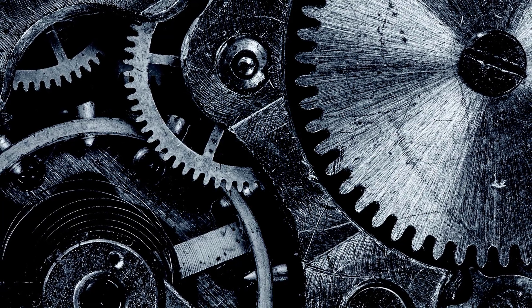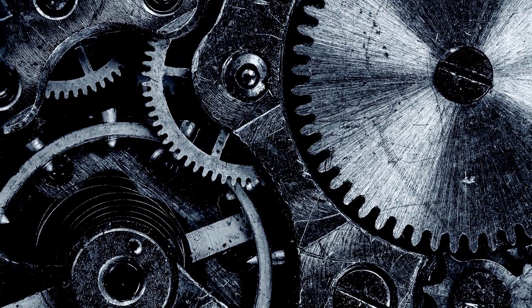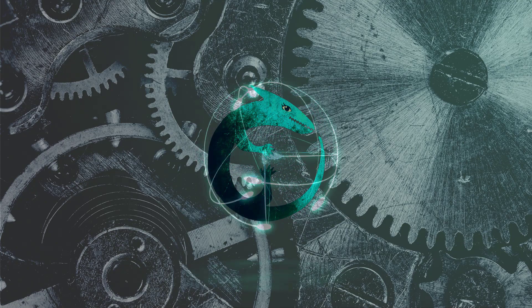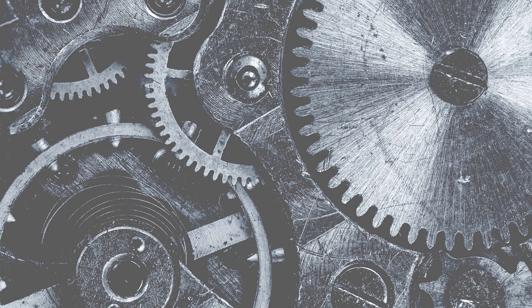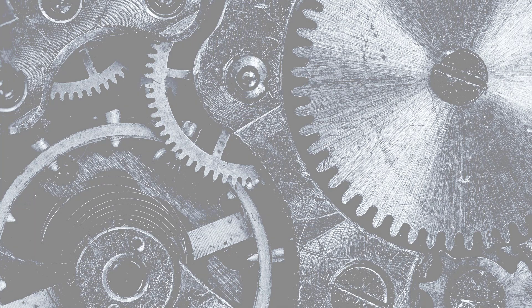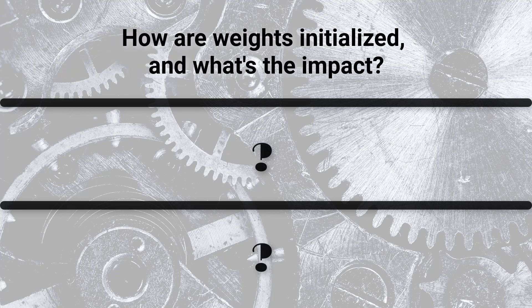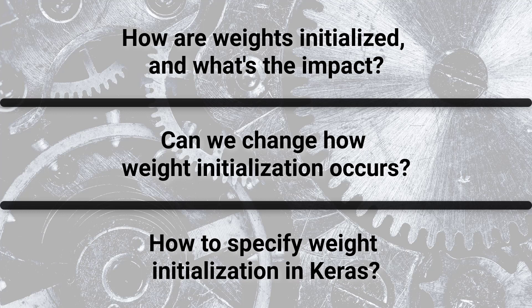In this video, we'll talk about how the weights in an artificial neural network are initialized, how this initialization affects the training process, and what you can do about it. We're first going to discuss how these weights are initialized and how these initialized values might negatively affect the training process. Then we'll explore what we can do to influence how this initialization occurs, and we'll see how we can specify how the weights for a given model are initialized in code using Keras.